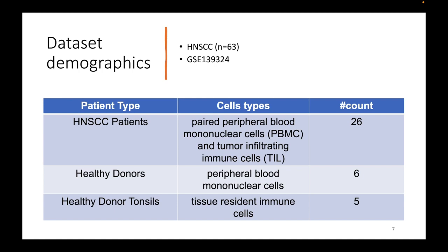The dataset used in our experimentation is head and neck squamous cell carcinoma, downloaded using a GEO accession number, and it contains 63 samples from both disease and healthy individuals. For patients categorized under disease, the cells come from two different kinds: PBMC and tumor infiltrating cells.